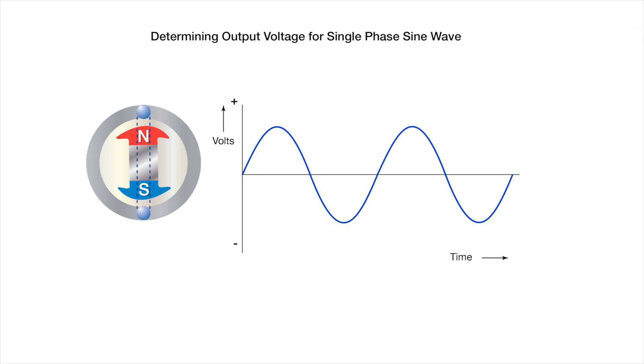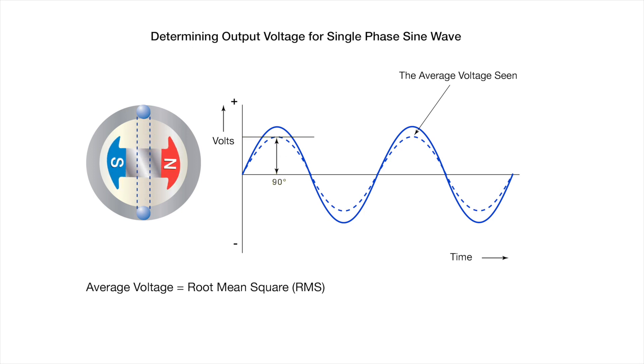To calculate the voltage output, the connected load sees the average voltage output as used, calculated as the root mean squared, or RMS, value, not the peak sine wave voltages. At 90 degrees, the positive peak voltage of the RMS value is reached, which in a single-phase generator is 110 volts when measured from the neutral to line one.